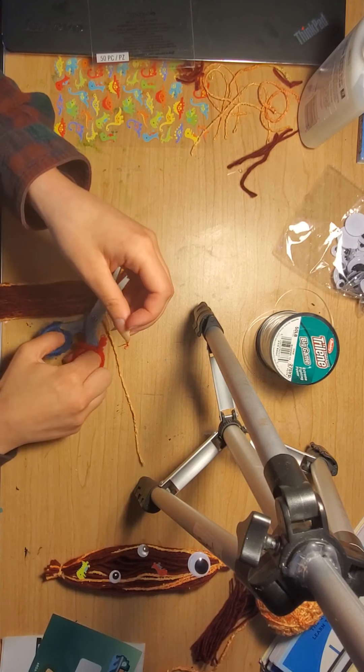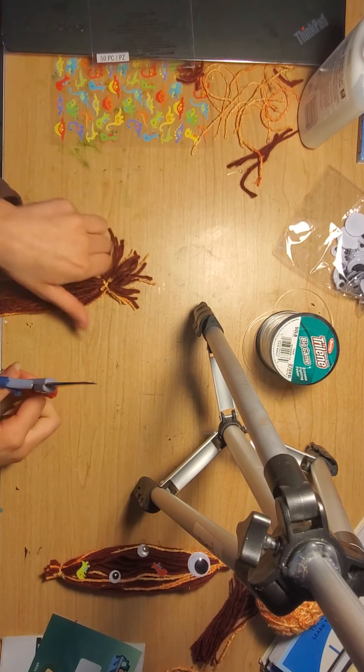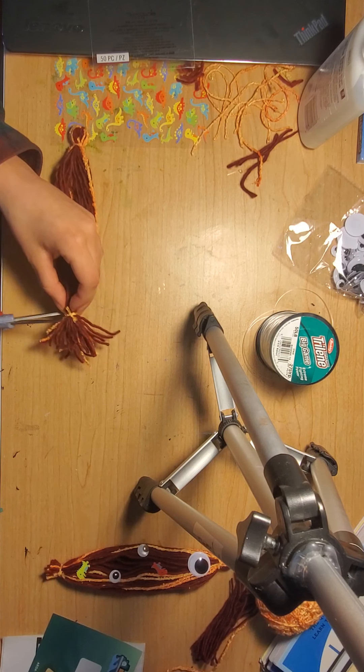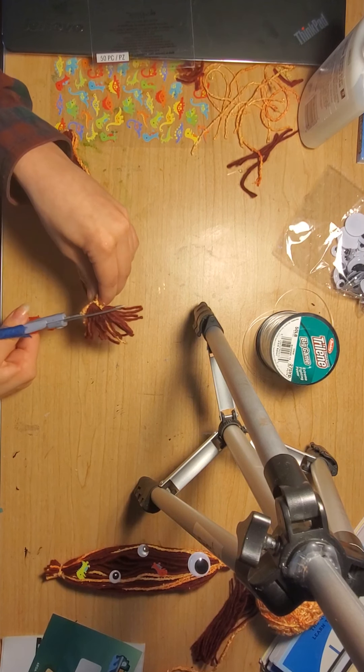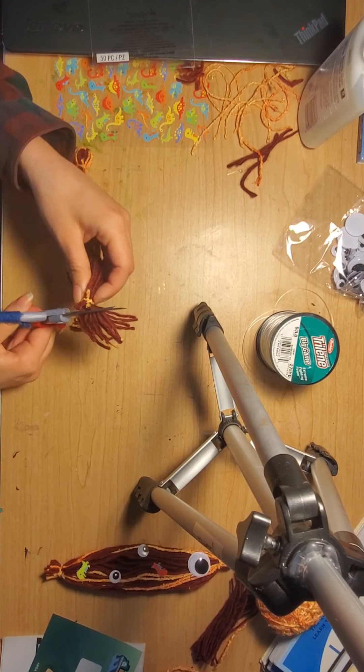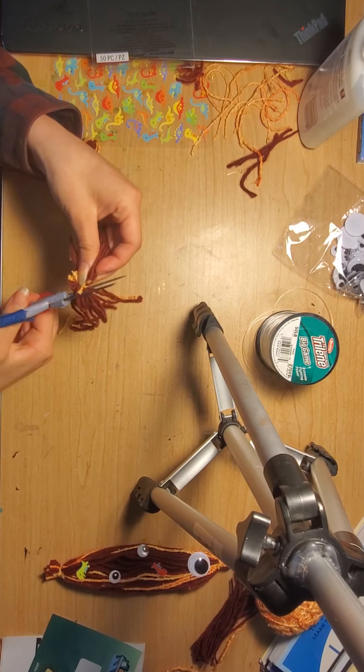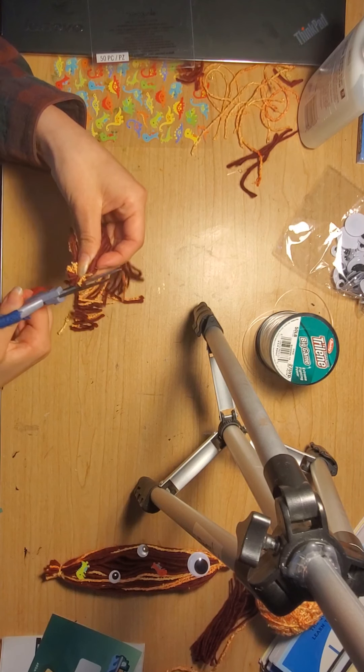And if you need help then just ask for help. I bet some of you have siblings that could help you or maybe mom or dad. And I'm going to trim off our butt feathers. You don't have to trim off your butt feathers. You can keep them. It is all up to you. This is your worm fish creature thing.